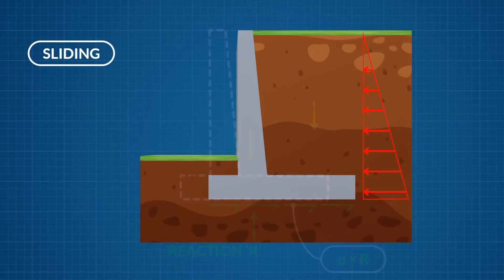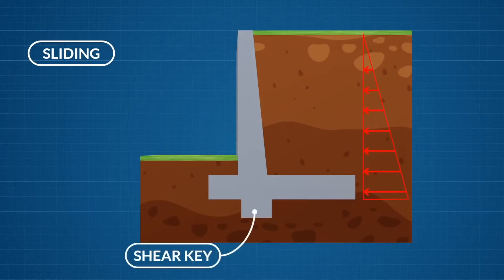If the active earth pressure is high and the wall is failing in sliding, then a shear key can be introduced to provide additional sliding resistance.